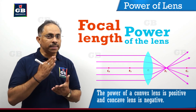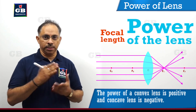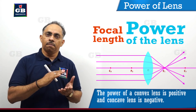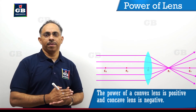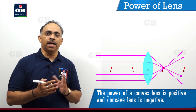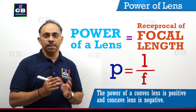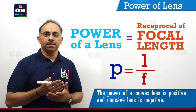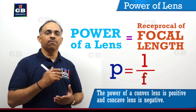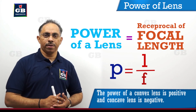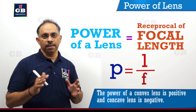When the focal length is small, the power is larger. When the focal length is larger, the power is small. So the focal length of a lens and the power of a lens are inversely proportional to each other. In fact, the power of a lens is equal to the reciprocal of the focal length. Hope the concept of power of a lens is clear to you.